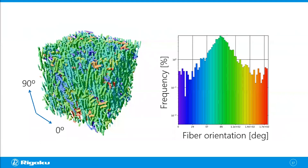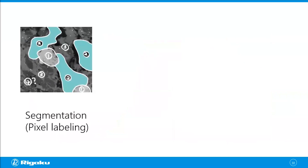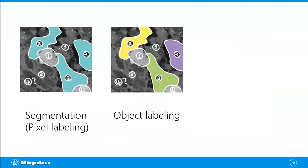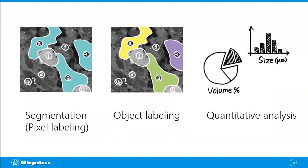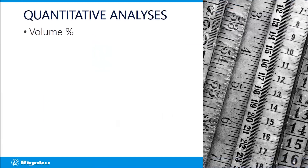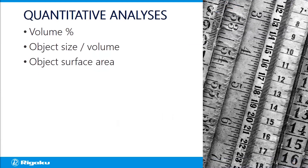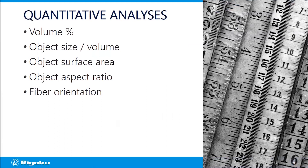For example, you can make a histogram of void volume distribution to see how large the voids are and how many you have. Similarly, you can look at the fibers and analyze fiber orientation distribution. This is the main flow of X-ray CT data analysis: start with the raw image, segment it into different phases, label individual objects within each phase, then move on to quantitative analysis. Typical analyses include volume percentage, object size, volume, surface area, aspect ratio, orientation distribution, and layer thickness distribution.